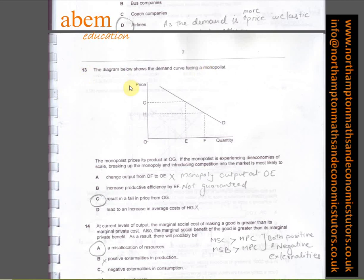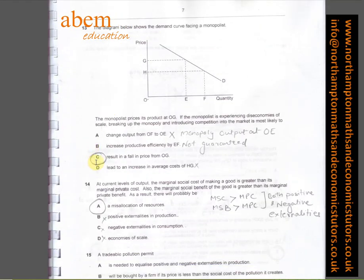In question number thirteen, the diagram shows the demand curve facing a monopolist. I've put down C as the answer and used process of elimination. A is not the answer as monopoly output at OE. In part B, increased productive efficiency by EF not guaranteed in a monopoly. So C is the answer: result in a falling price from OG. If the price is brought down, the quantity demanded will increase to EF.